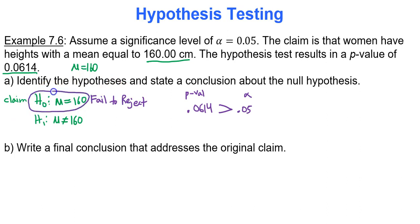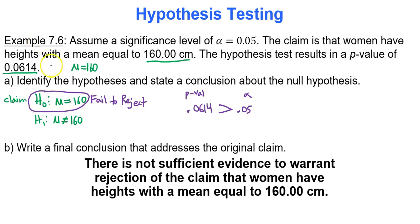Since we fail to reject our claim, all eyes are on the null hypothesis. Because the null hypothesis contains equality and we failed to reject it, the conclusion statement is: there is not sufficient evidence to warrant rejection of the claim that women have heights with a mean equal to 160. When the claim is the null hypothesis, your statement always discusses the conclusion in terms of rejection or failure to reject.